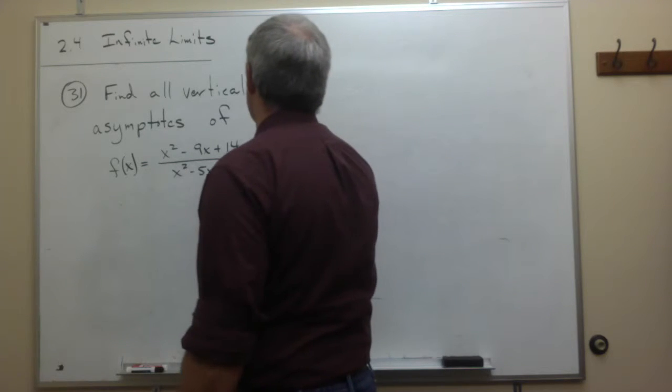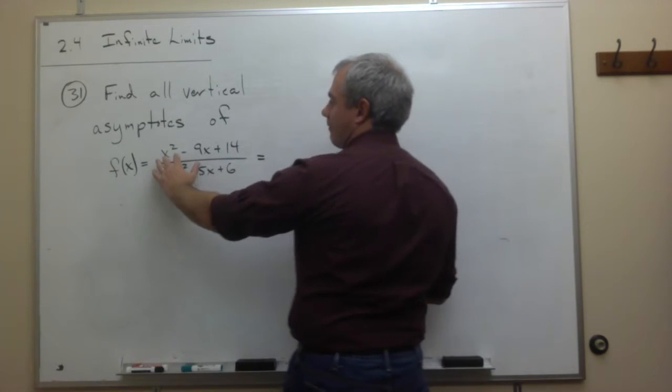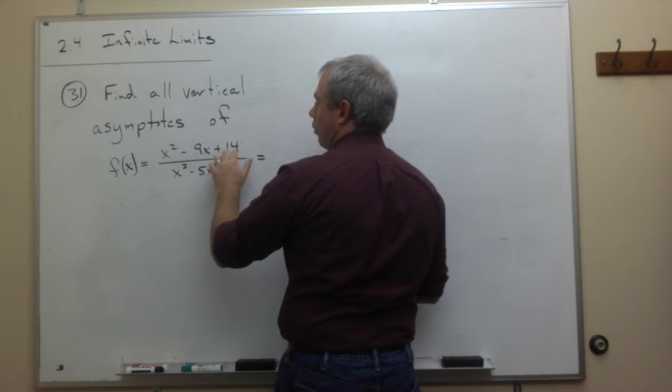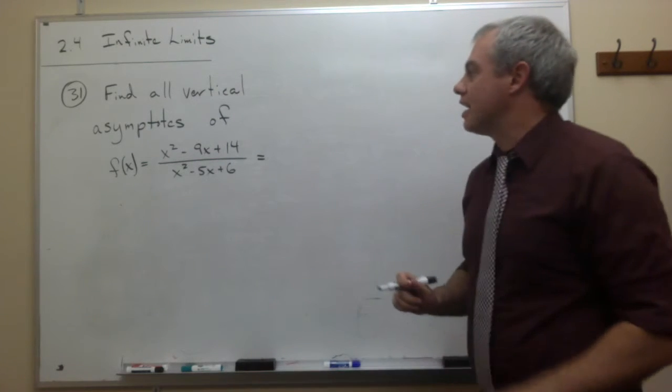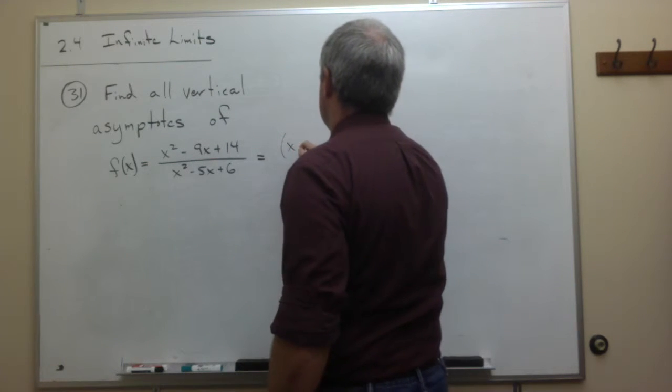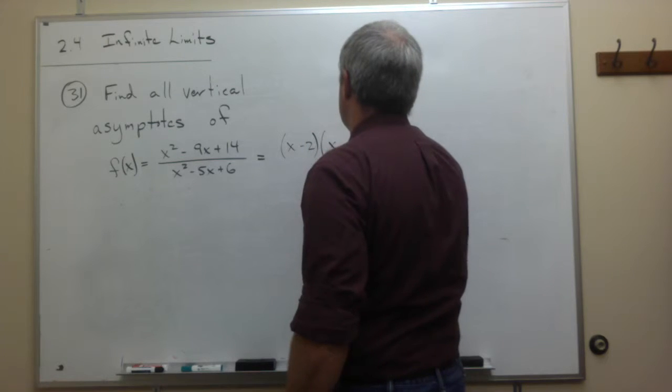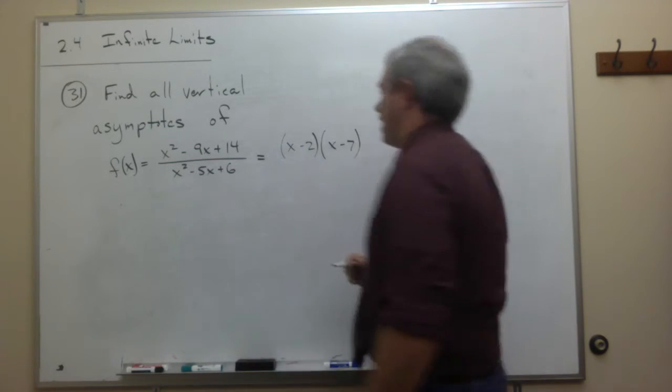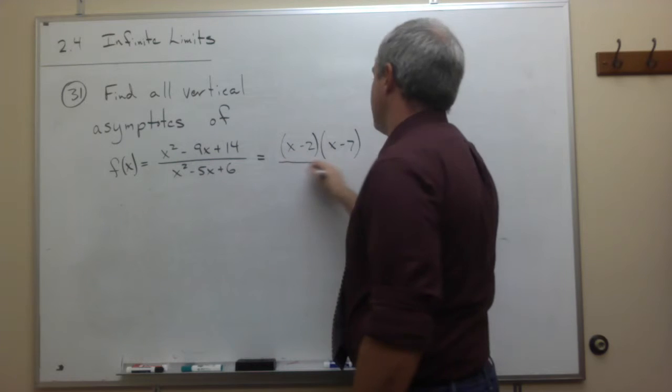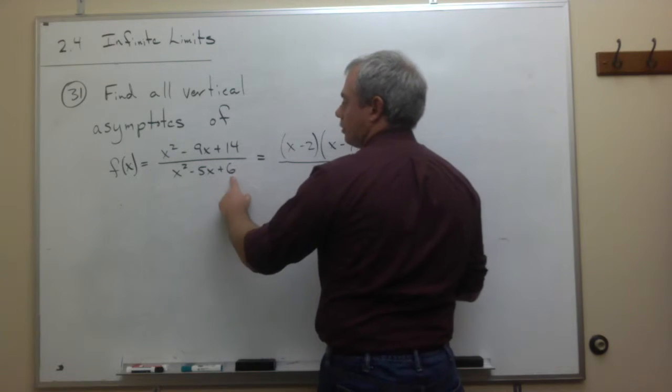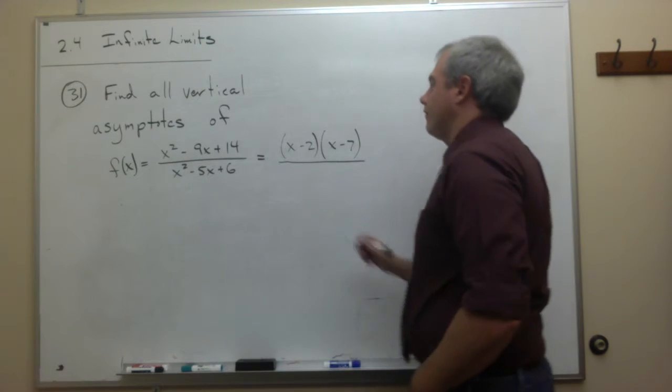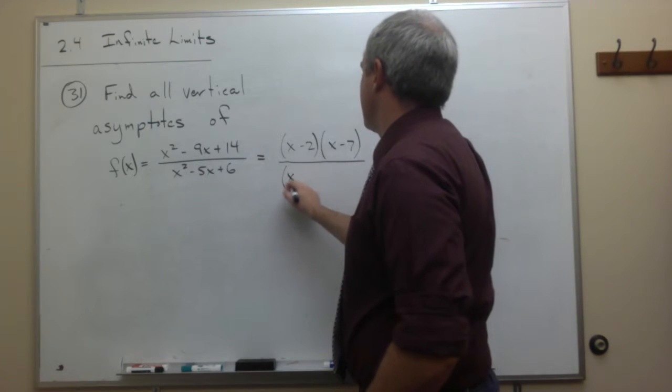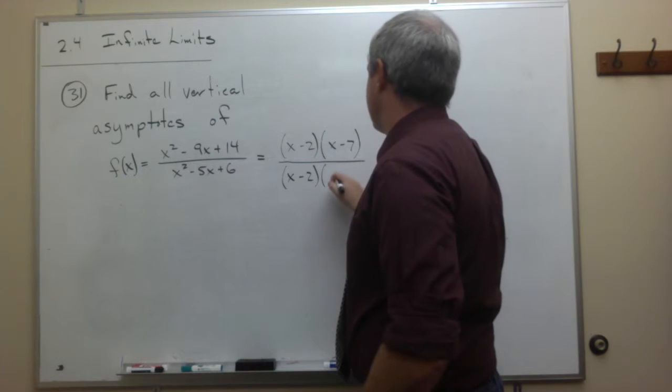So I factor this thing, and if I'm factoring the top, I'm looking for two things that multiply to give me positive 14 and add to give me minus 9. I suppose that would be negative 2 and negative 7. And then on the bottom, I'm looking to find two things that multiply to give me positive 6 and add to give me negative 5. So I guess that would be x negative 2 and negative 3.